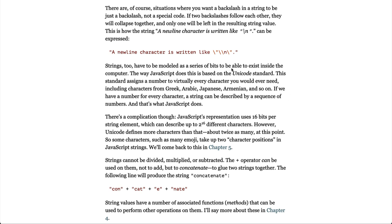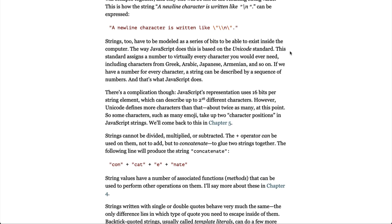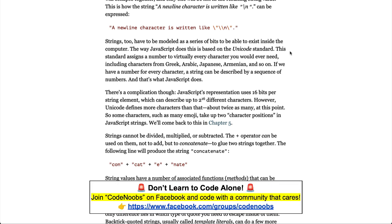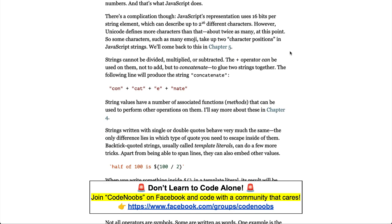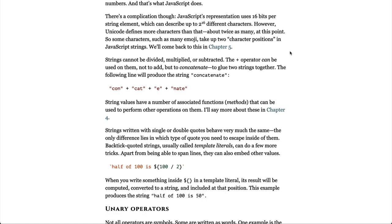Strings too have to be modeled in a series of bits to be able to exist inside the computer. The way JavaScript does this is based on the Unicode standard. This standard decides a number to virtually every character you would ever need including characters from Greek, Arabic, Japanese, Armenian, and so on. If we have a number for every character, a string can be described by a sequence of numbers, and that's what JavaScript does. There's a complication though. JavaScript's representation uses 16 bits per string element which can describe up to 2 to the 16 different characters. However, Unicode defines more characters than that, about twice as many at this point. So some characters such as Emoji take up two character positions in JavaScript strings. We'll come back to this in chapter 5.